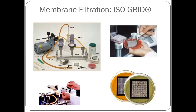Using a similar membrane filtration method, we can also test yeasts and molds. This is called ISO grid. You place filter paper in the funnel, the water passes through, then you transfer the filter onto agar and incubate. After incubation you will see colonies — mostly yeasts and molds. So ISO grid is a membrane filtration system for testing yeasts and molds.